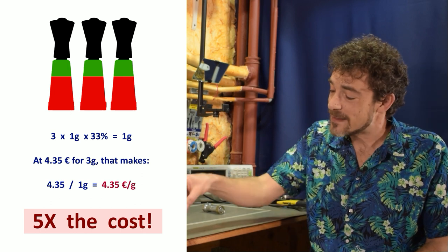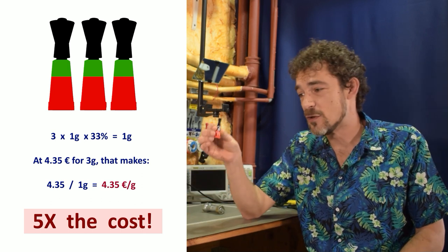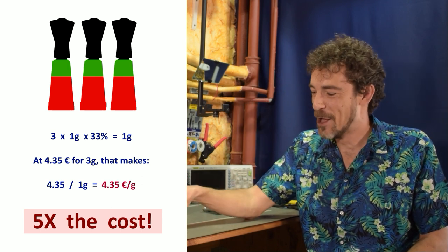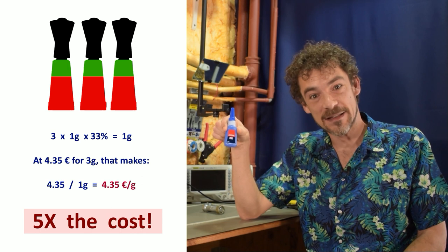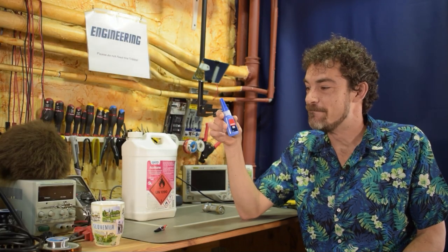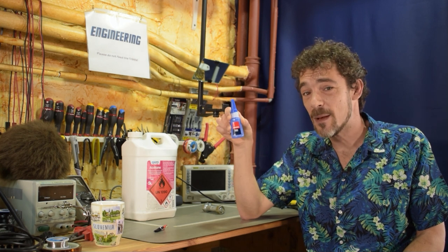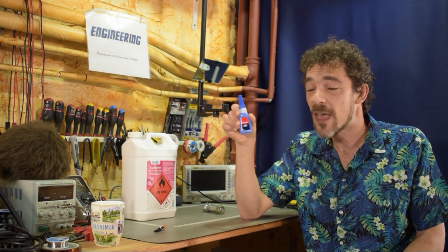Now you may notice that that means that superglue in these little tiny tubes is approximately five times the cost of superglue in these guys. Which means, yeah, if you get one of these larger ones, 20 grams, you still may not be able to use all of it, but it's way the heck cheaper.